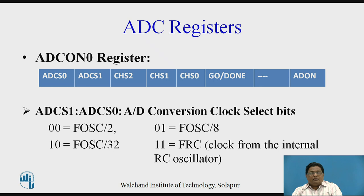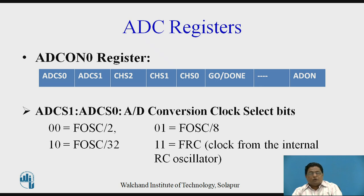ADCS1 and ADCS0 are called the conversion clock select bits. The ADC can operate on an external clock as well as the internal clock. If ADCS1 and ADCS0 are both 0, the ADC operates on the oscillator frequency divided by 2. For 0,1 it operates on oscillator frequency divided by 8, and if both bits are 1,1 the ADC operates on the internal clock.